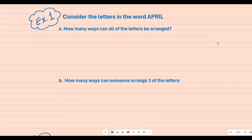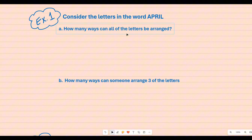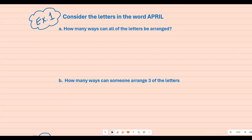For example one, we're asked to consider the letters in the word 'April.' The first thing you want to do is count the letters and ask yourself: is this a combination or permutation situation? It says 'how many ways can all of the letters be arranged?' I see the word 'arranged,' which tells me it's going to be a permutation. So n is five total letters, and I'm choosing all five.